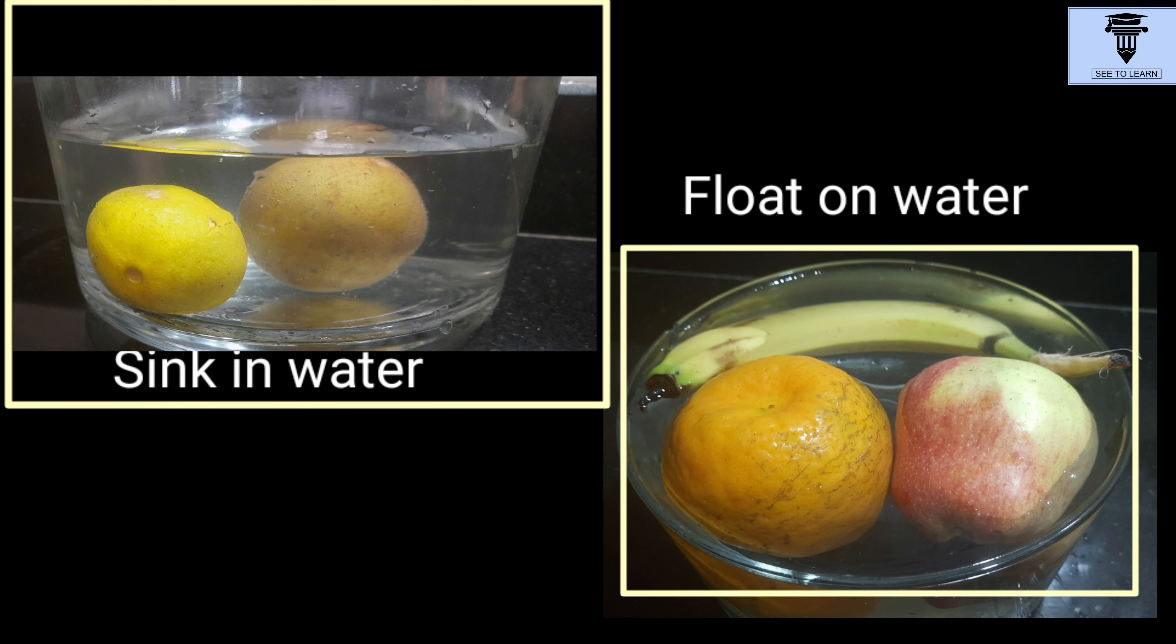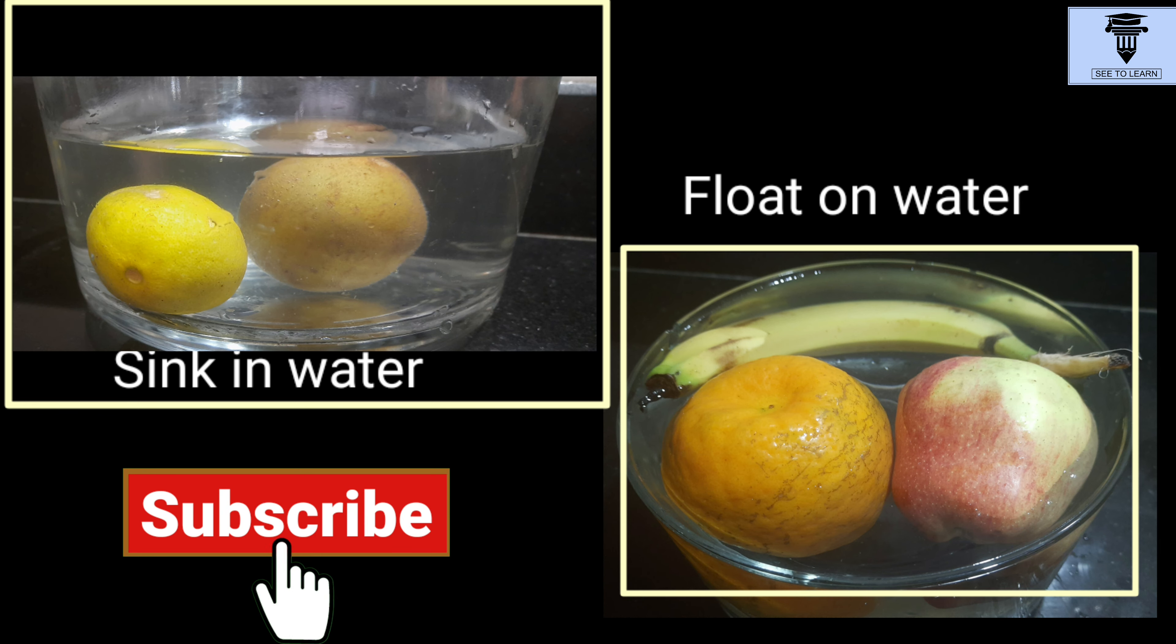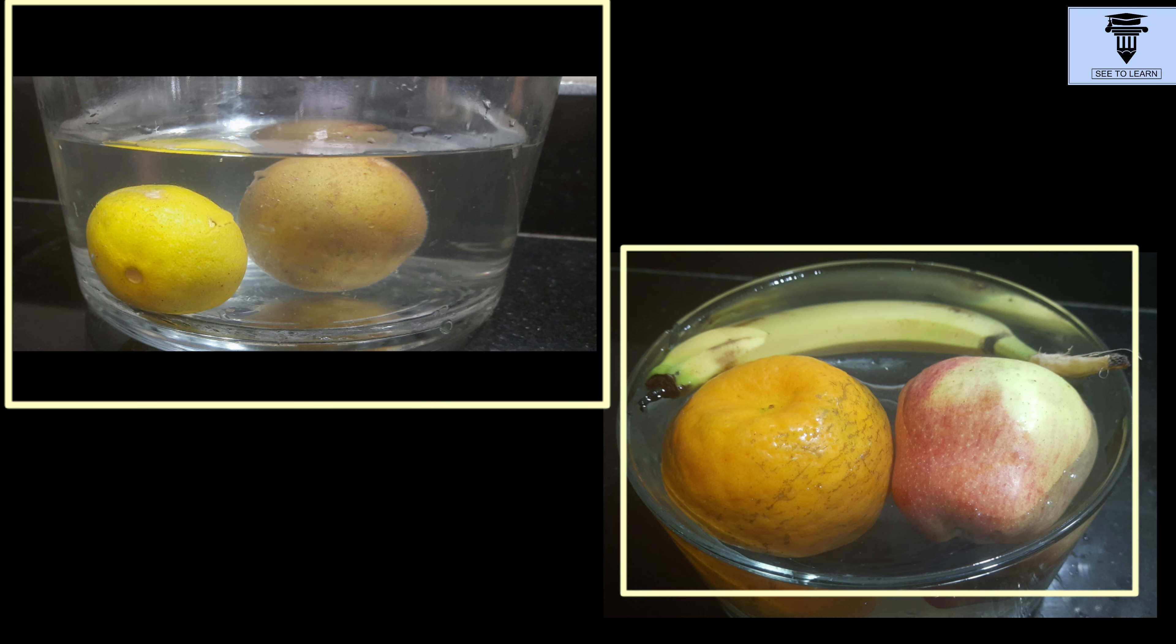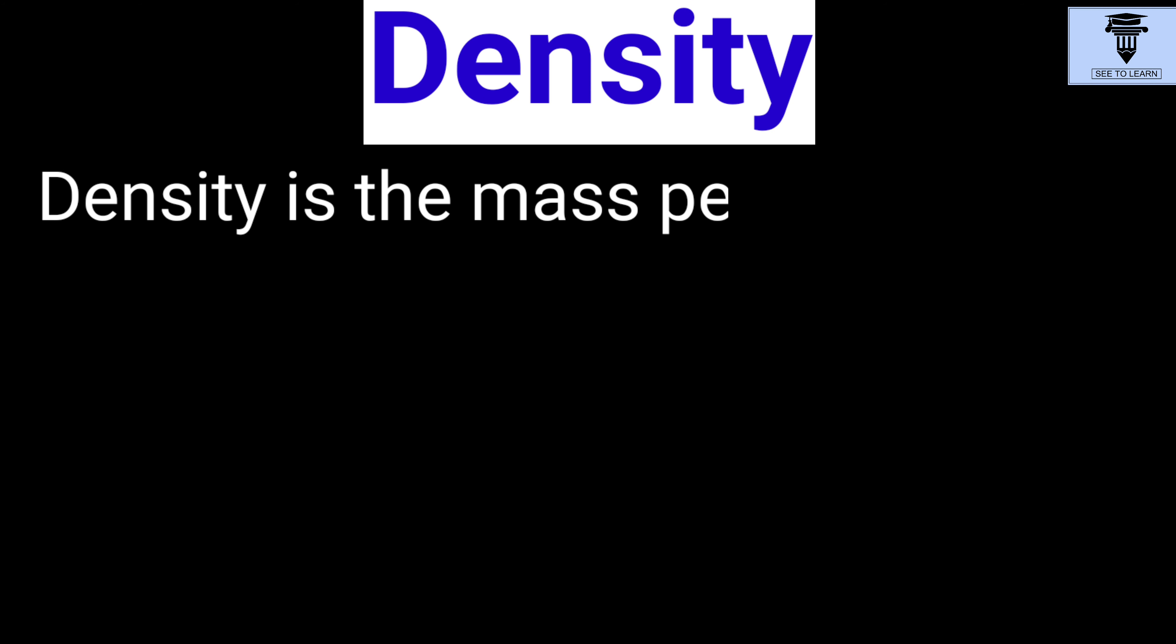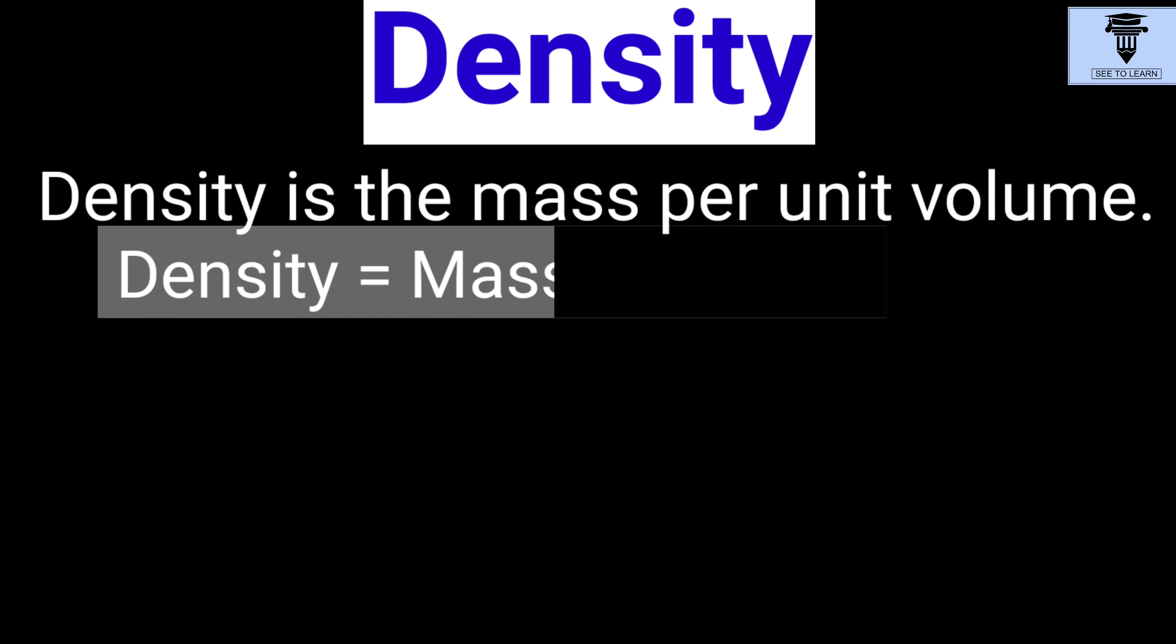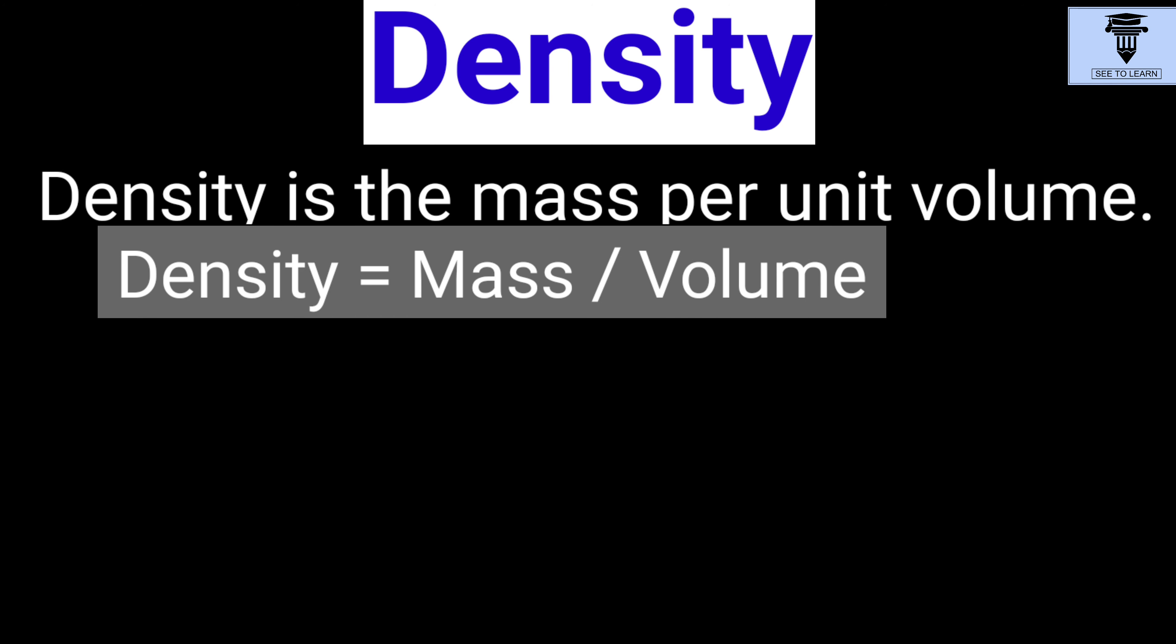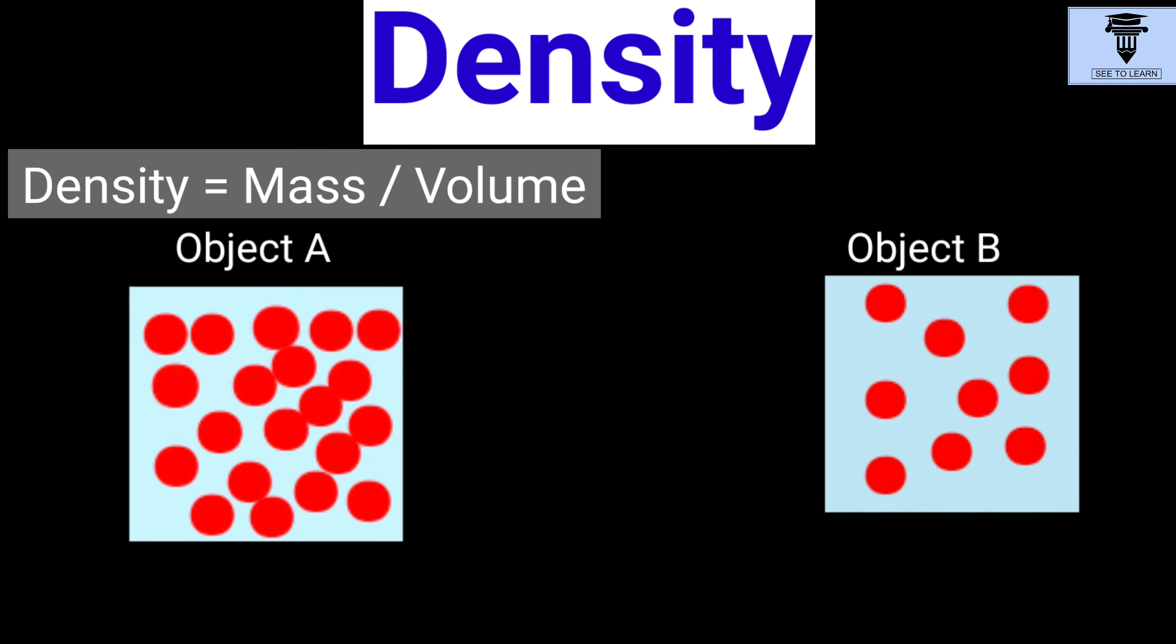Whether an object floats or sinks depends upon a characteristic property of the object called density. Density is the mass per unit volume. To calculate density, we divide mass of the object by its volume. Thus, the object which has more mass in equal volume is more dense. The SI unit of density is kg per meter cube.